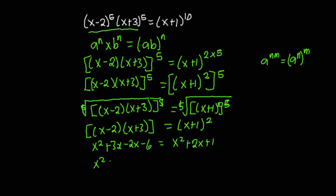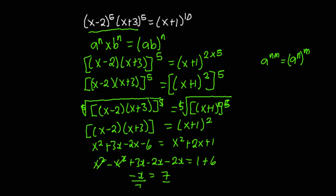So I'm going to group like terms. I get x squared minus x squared, plus 3x minus 2x minus 2x, which is equal to 1 plus 6. The x squared terms cancel out, and 3x minus 2x minus 2x gives negative x, so negative x is equal to 7. To find x we divide both sides by negative 1.